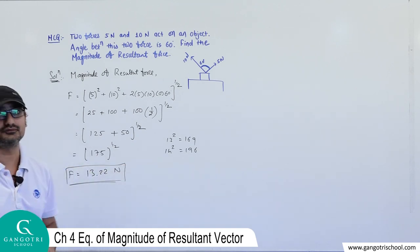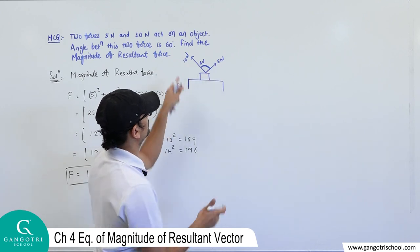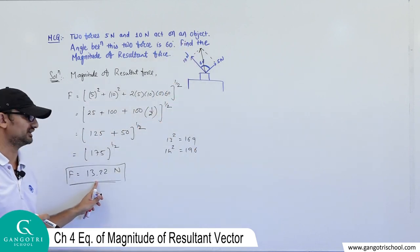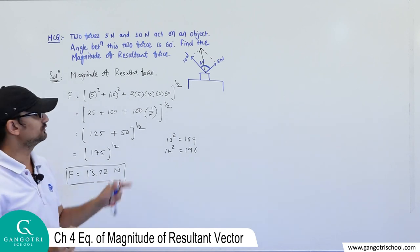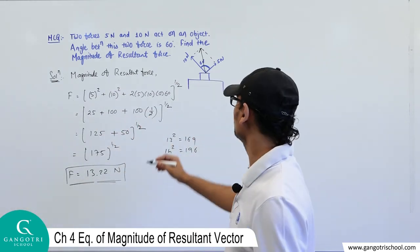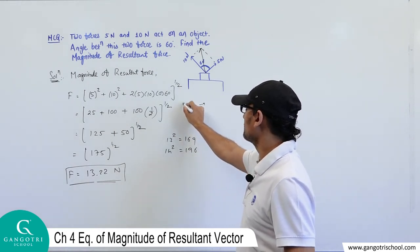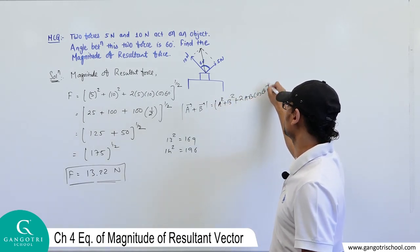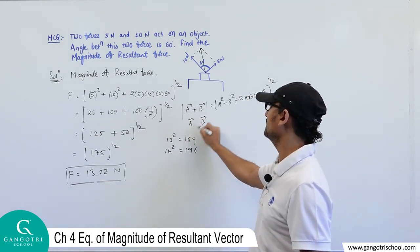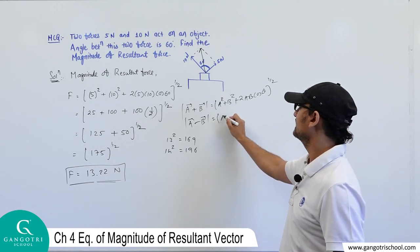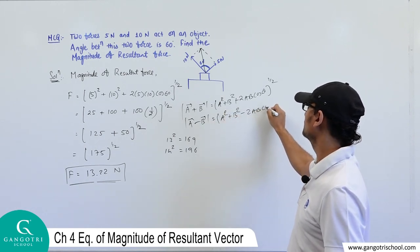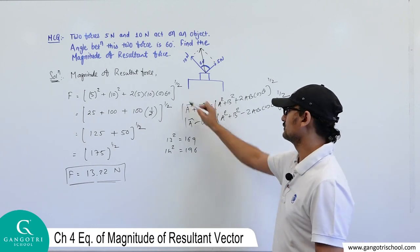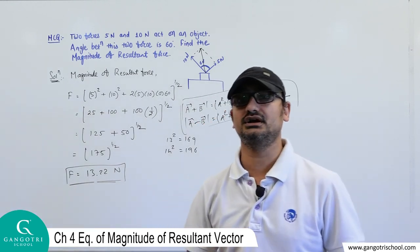So the magnitude of the resultant force is 13.22 N. Always remember: for two vectors A and B, the magnitude of their addition is (a² + b² + 2ab·cosθ)^(1/2), and the magnitude of their subtraction is (a² + b² − 2ab·cosθ)^(1/2). These two equations are very helpful for solving problems in a shortcut way.